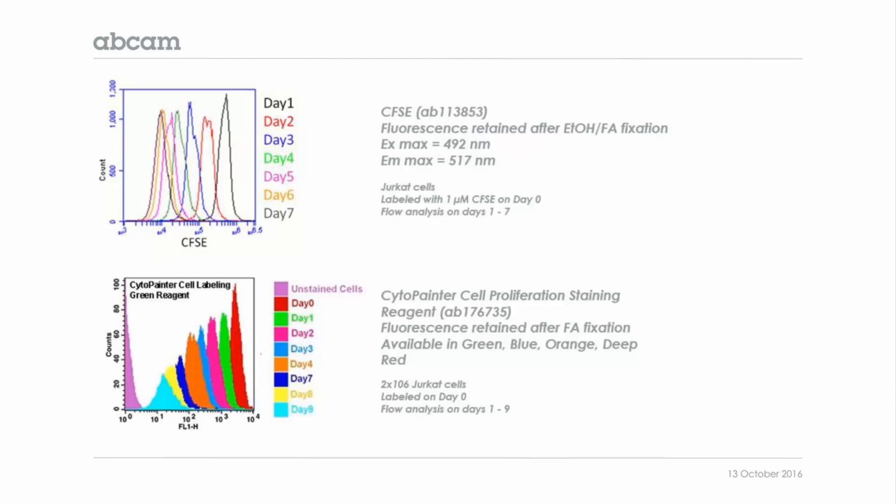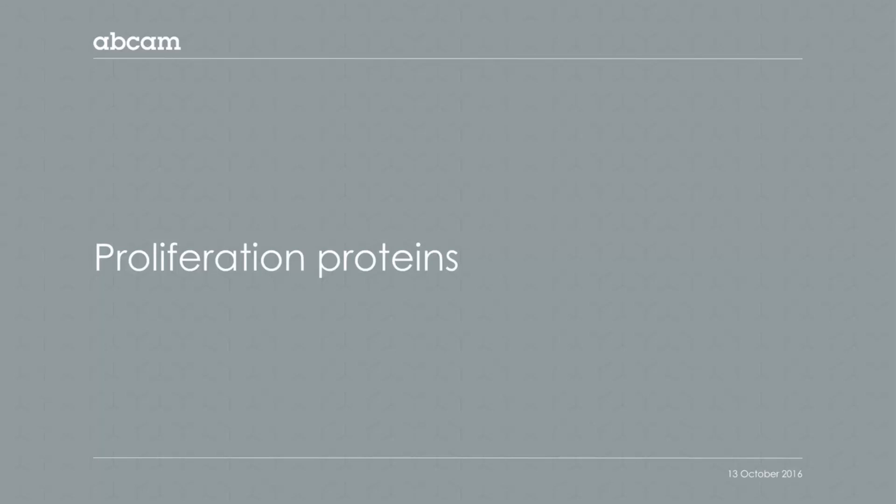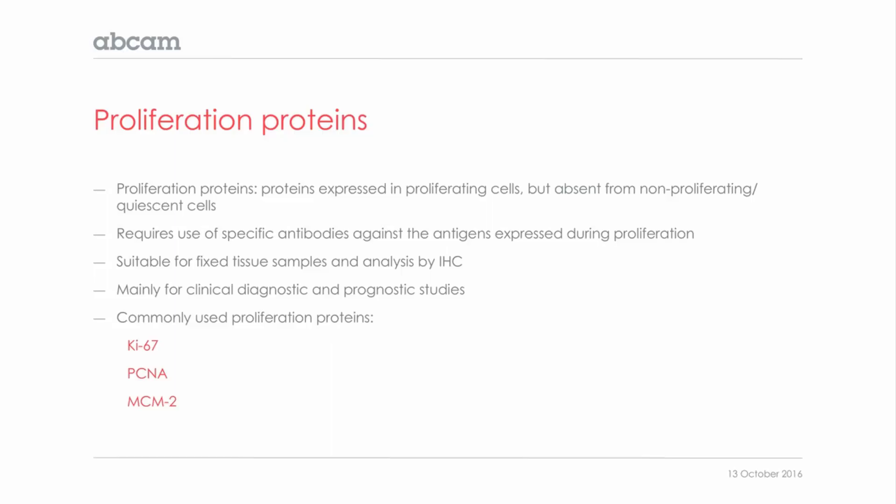I will now briefly cover how to study proliferation by staining proliferating proteins. There are some proteins only expressed when cells are proliferating; the most commonly known markers are Ki-67, PCNA, and MCM2. These proliferating proteins need to be detected in a spatial-temporal context using specific antibodies in tissue samples. These markers are mainly used for clinical diagnostic and prognostic studies, and therefore are not really suited to studying a larger number of samples.